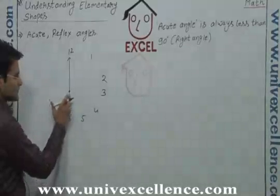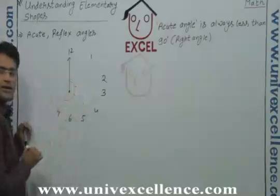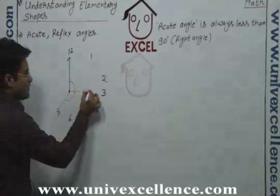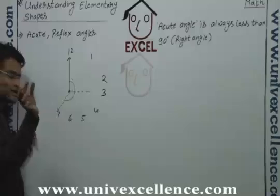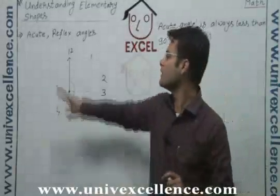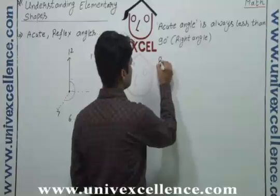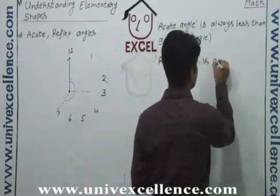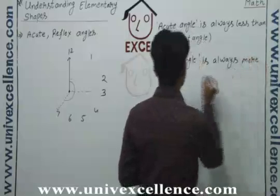If it goes more than a straight angle — because when it is on 6, if it goes to 7 o'clock, this will be the angle. This angle is more than a straight angle, more than a right angle. From 6 to 7 there is one more gap. So if any angle is more than a straight angle, it will be called a reflex angle. A reflex angle is always more than a straight angle.